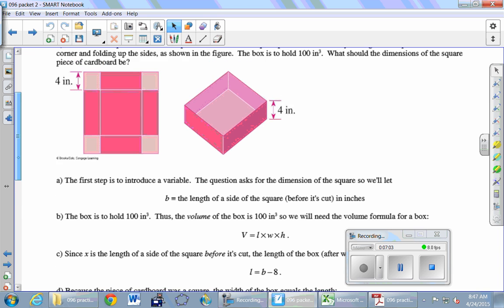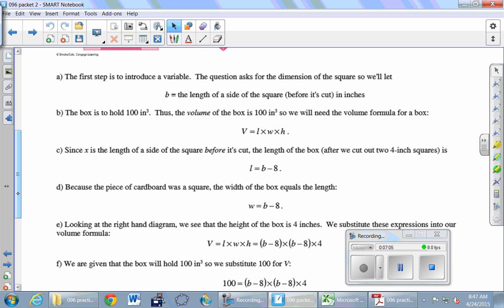Okay. So just running through, like I said, we're going to blitz through this. Part A says we introduce a variable for the side of the original piece of cardboard or the original square. So B is the length of one side of the square before it's cut, and we'll measure that in inches.